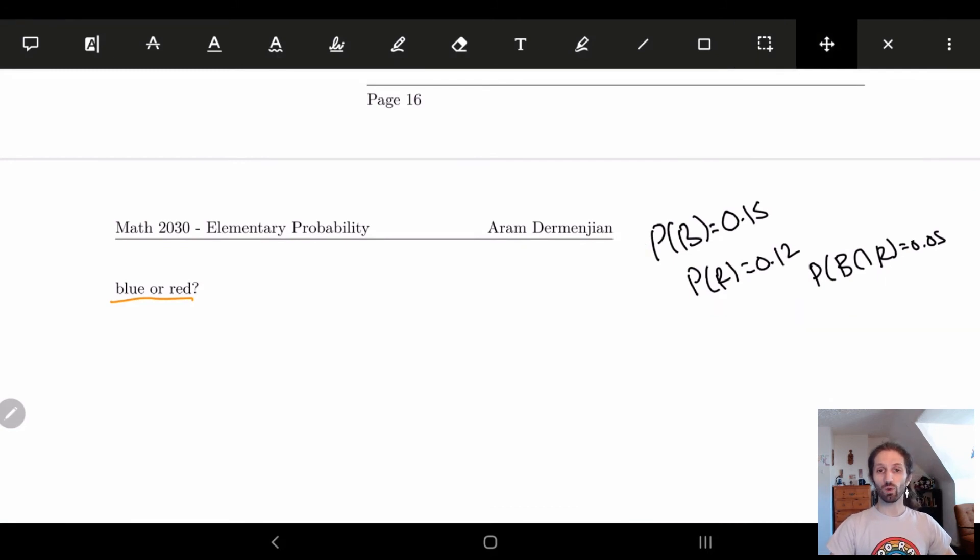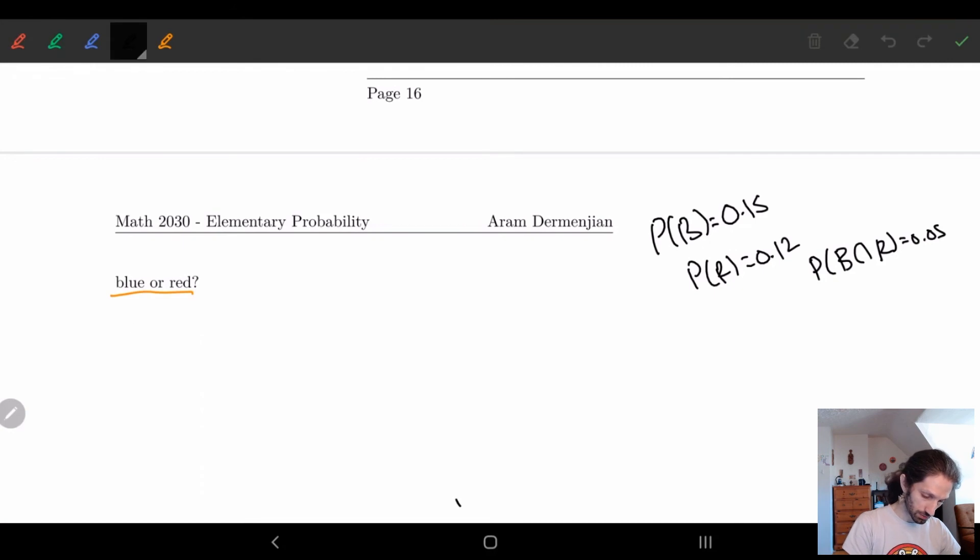So we're going to ask either red or blue. So let's do this. So what is that asking? That is asking the probability of red or blue. So we're asking the probability of R union B. So here you should automatically think inclusion, exclusion, inclusion, exclusion rule.